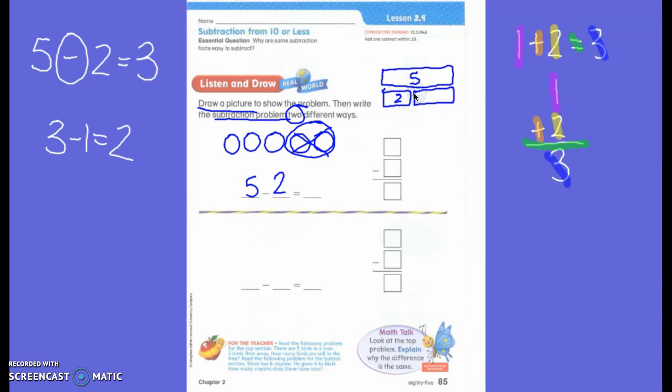Do you notice that two only takes up this much? But then this number will probably be very close to what number? To the two. Because it's a little bit bigger than this box, but it's not the same size. Okay? So that can help you if you chose to do bar model. If you chose to do cubes or counters, this is what it should look like. Okay? So raise your hands if you know what the difference is with 5 minus 2. First grade? Three. Wonderful. So write your difference please.